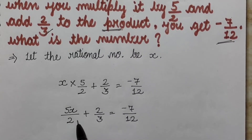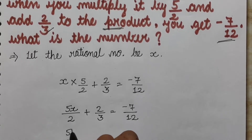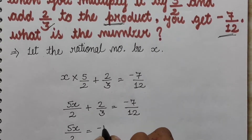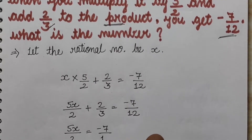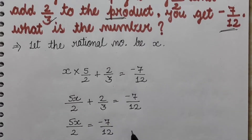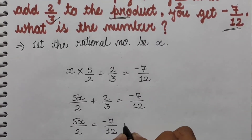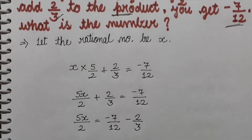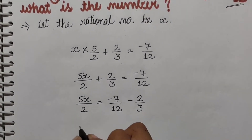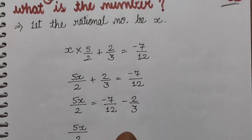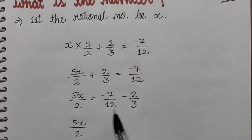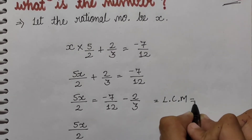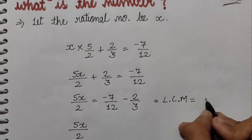Ab hum 5x upon 2 ko side mein le lenge. So 5x upon 2 equals minus 7 upon 12. 2 upon 3 idhar aayega toh yeh negative ho jaayega, so minus 2 upon 3. Ab hum in dono ka LCM lenge — 12 aur 3 ka LCM aayega 12.